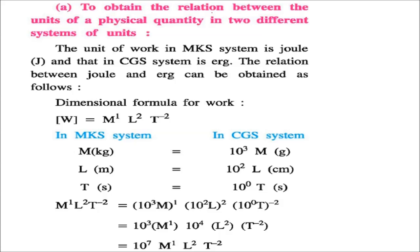To obtain the relationship between units of a physical quantity in two different systems: the unit of work in MKS (meter, kilogram, second) is the Joule (J), and in CGS it is the Erg (ERG). We want to find the relationship between Joule and Erg.